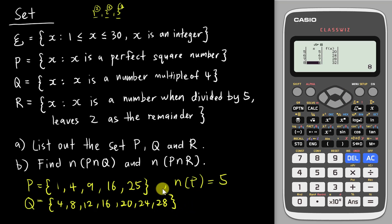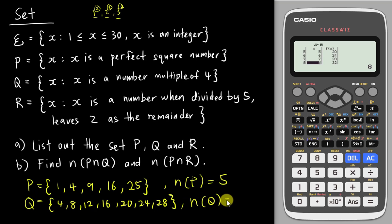Remember to use the correct set brackets — open bracket and close bracket. If the question asks for the number of elements in Q, you just count: 1, 2, 3, 4, 5, 6, 7 — so I have 7 elements in set Q.